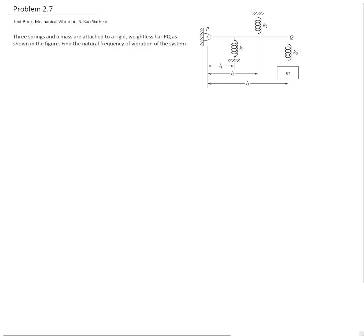This is a system of only one degree of freedom. I will describe my degree of freedom with a variable x of the mass. I will have other variables like, for example, the displacement of Q that I will call y. I need that to describe the relative displacement of the ends of spring K3.